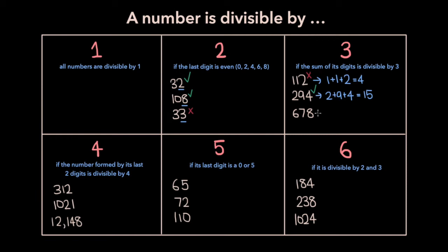Let's do the same thing for 678. 6 plus 7 plus 8, which is 21. 21 is divisible by 3 — 21 divided by 3 is 7 — and so 678 is divisible by 3 as well.